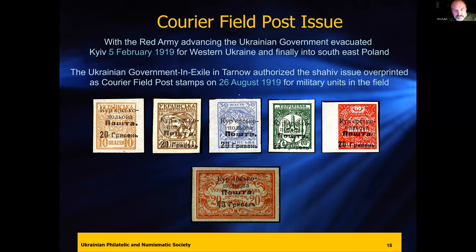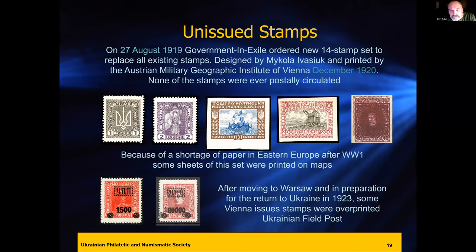There were courier field post stamps — the regular definitive stamps overprinted 'Ukrainian Courier Post.' Another huge definitive set of 14 stamps was printed in Vienna, designed by Mykola Ivasiuk. At CAPEX, we honored him with a picture-poster stamp on a Canadian picture-poster stamp and an illustrated cover. He designed a lot of stamps and banknotes, and they were printed in Vienna.